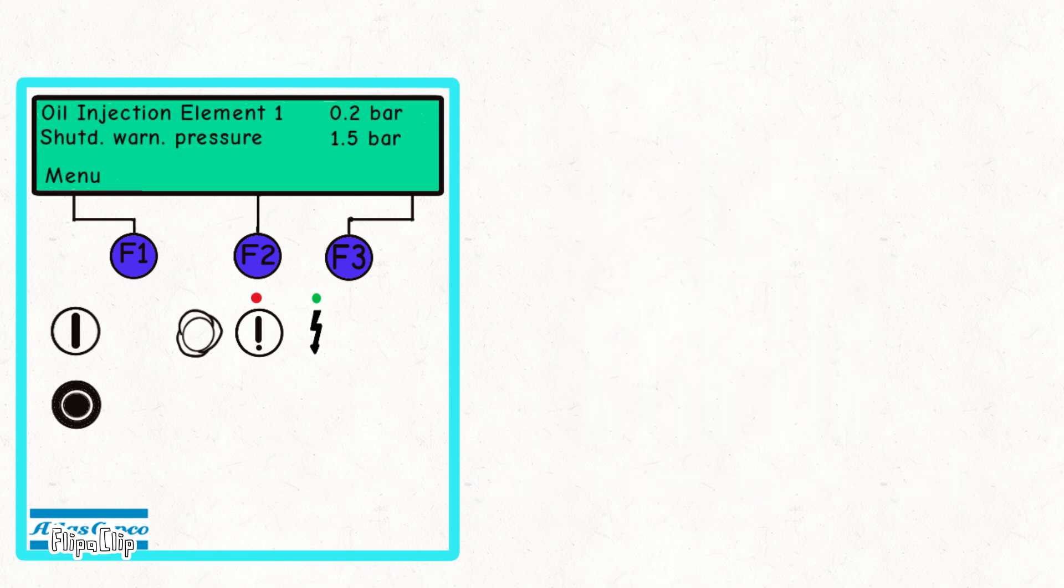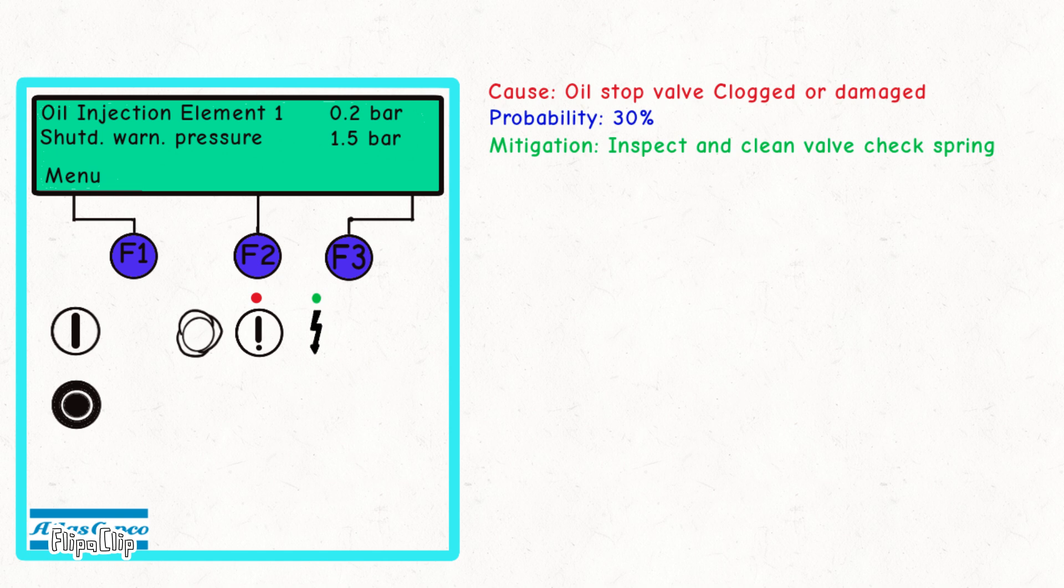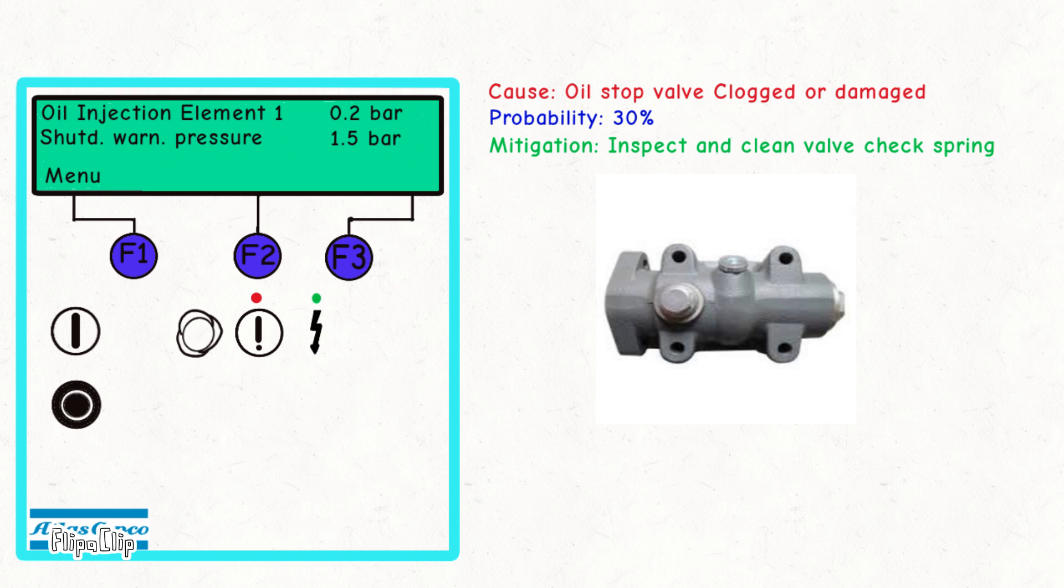Low oil injection pressure can impact the performance of your screw compressor. The first cause we'll discuss is damage to the oil stop valve, with a probability of 30%. Inspect and clean the valve.